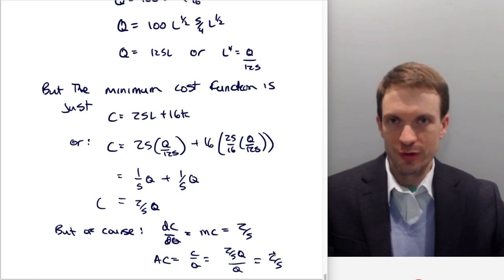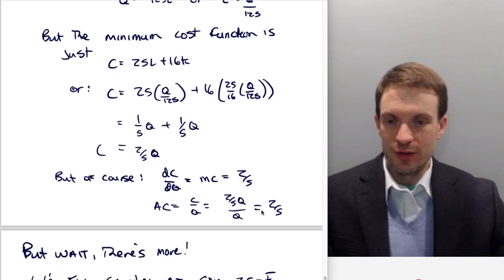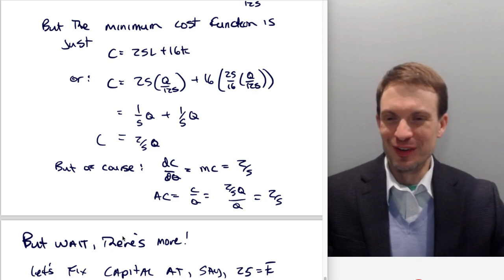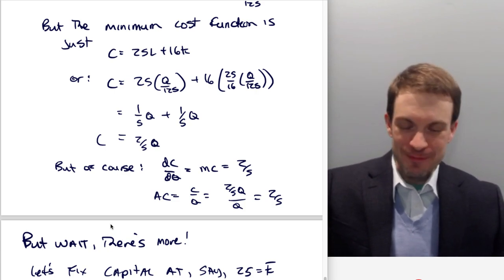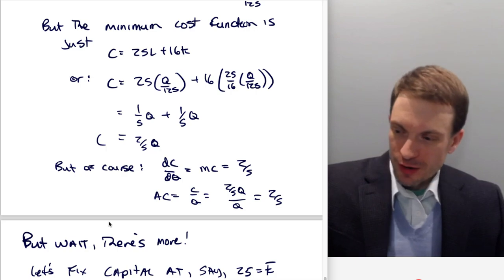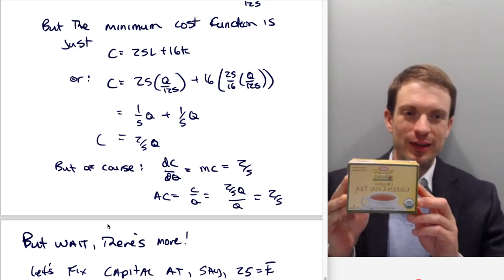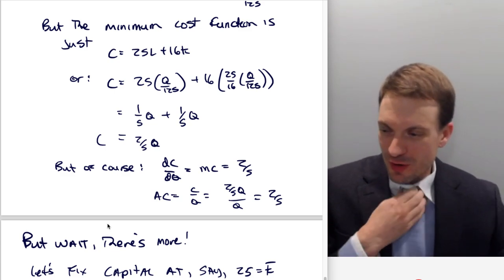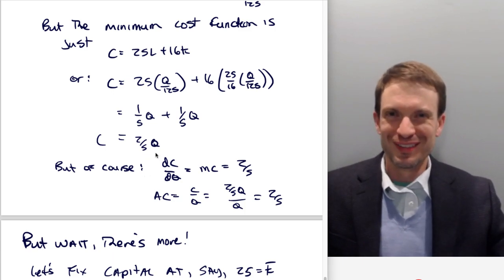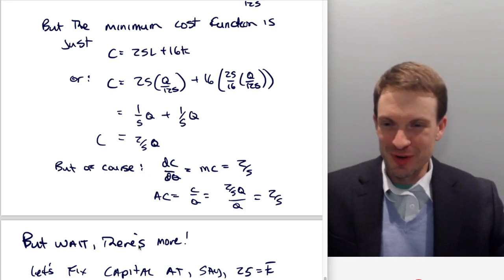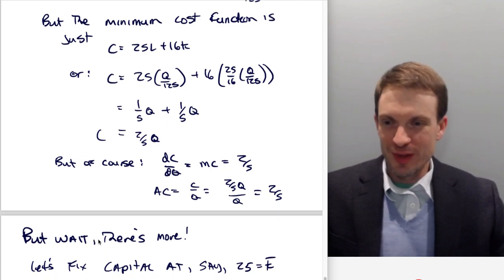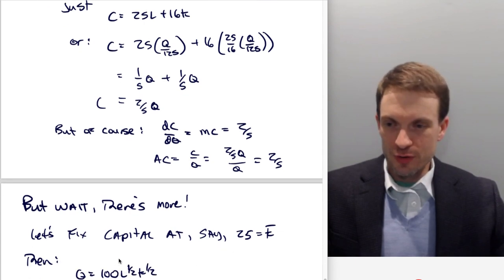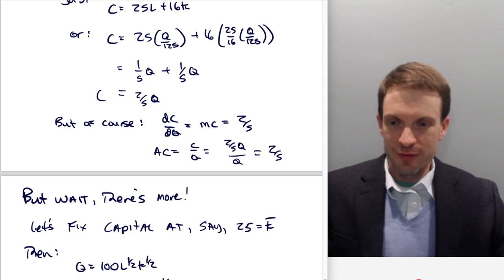Can we get the other cost functions? Yeah. Let's suppose we're in a short run world so we can find average total cost. And so let's fix, so I say, but wait, there's more. This is not an infomercial, although I'm drinking my chai latte tea sponsored by Giant Eagle. So Giant Eagle can sponsor me for my 250 subscribers, none of which probably live in Pittsburgh where Giant Eagle is located. Anyway, but wait, there's more.